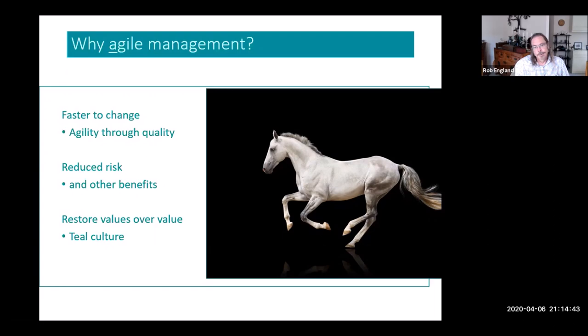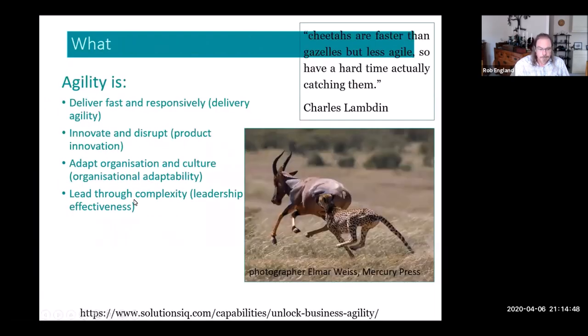So agility, as I've already mentioned, is about sure, it's about being fast. But it's more about our ability to change direction, to pivot, to innovate, to be disruptive. To be adaptive to our externalities. So as the world changes, we adapt as quickly as possible as an organization to what's going on. And to forge our way through complexity and allow leaders to deal with the complex world that we live in.